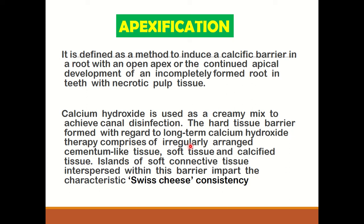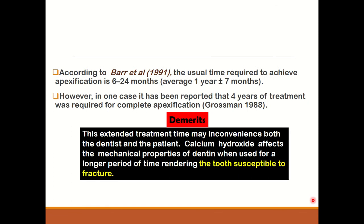When calcium hydroxide is used as a creamy mix to achieve canal disinfection, a hard tissue barrier is formed. With long-term calcium hydroxide therapy, an irregularly arranged cementum-like tissue, soft tissue and calcified tissue is formed, imparting characteristics of a cheese-like consistency. The usual time required to achieve apexification is 6 to 24 months; however, there is a case report of 4 years of treatment. This extended time period is a demerit as it may be highly inconvenient for both dentist and patient, and calcium hydroxide also affects the mechanical properties of dentine when used long-term, rendering the tooth susceptible to fracture.